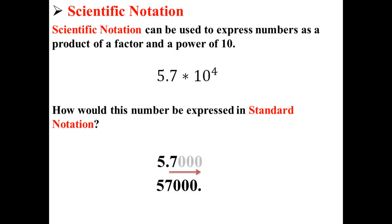Well, we simply take our decimal point and move it four points to the right. Because we have a positive exponent, so we're going to make things larger. So, 5.7 times 10 to the fourth is equal to 57,000.